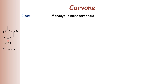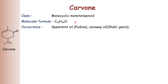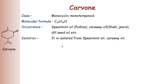This is the structure of carvone. Carvone is a monocyclic monoterpenoid. Its molecular formula is C10H14O. As it contains 10 carbon atoms, its class is monoterpenoid, and it contains one ring, therefore the class is monocyclic monoterpenoid. It occurs in spearmint oil (pudina) and caraway oil (shahi jeera), dill seed oil, etc.